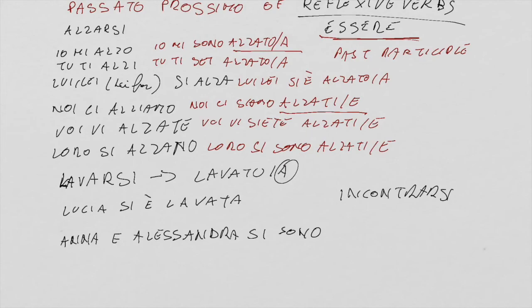And then I have to choose the correct form of the past participle of incontrarsi, or incontrare is the same, that is incontrato. But then I have to change the final -o to the Italian -e, since Anna and Alessandra are plural and feminine. So Anna e Alessandra si sono incontrate.